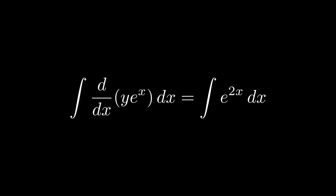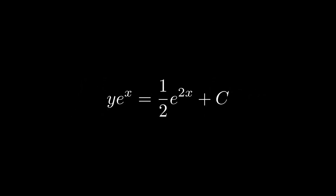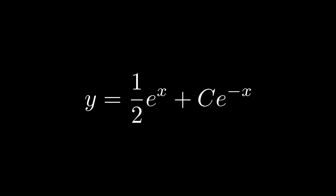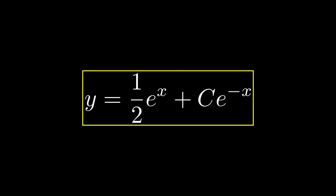Taking the integral of both sides gives y · e^x equals (1/2)e^(2x) + c. Then we simply divide out the e^x to get the final solution.